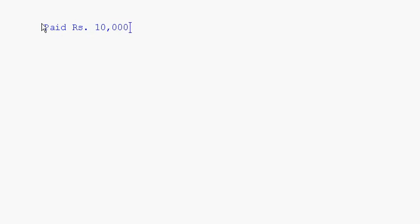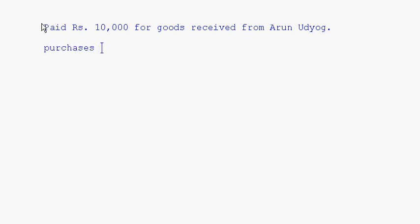Next: paid Rs. 10,000 for goods received from Arun Udyog. You are paying Rs. 10,000, which means this involves cash. This is actually put in a different way — it means you are purchasing goods from Arun Udyog and paying 10,000 for that. Whenever the term 'goods' comes, it is basically either a purchase or a sales. Here, goods received from Arun Udyog means it is a purchase, and we are paying for that purchase in cash — so this is a cash purchase.